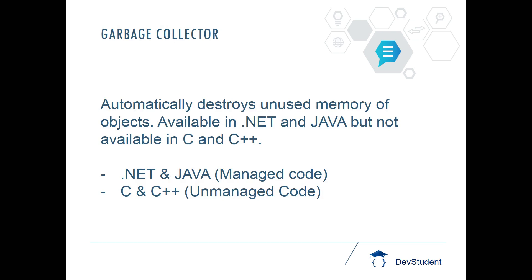We have garbage collector in .NET which is responsible for automatically destroying unused memory of objects. Idle objects will be identified and destroyed automatically by the garbage collector. This feature is available in .NET and Java but not in C and C++. As .NET and Java automatically manage memory, they are known as managed code, whereas in C and C++ memory deallocation has to be done manually by the developer.